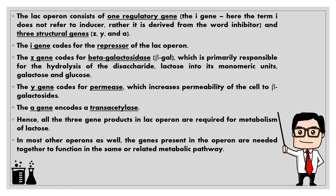The I gene codes for the repressor of the lac operon. The Z gene codes for beta-galactosidase, which is primarily responsible for the hydrolysis of the disaccharide lactose into its monomeric units, galactose and glucose. The Y gene codes for permease, which increases permeability of the cell to beta-galactosides. The A gene encodes transacetylase. Hence, all three gene products in the lac operon are required for metabolism of lactose.